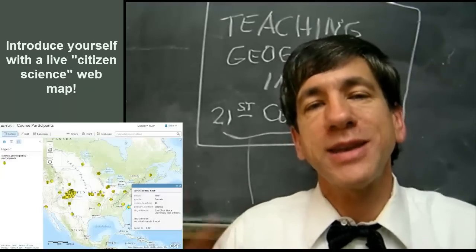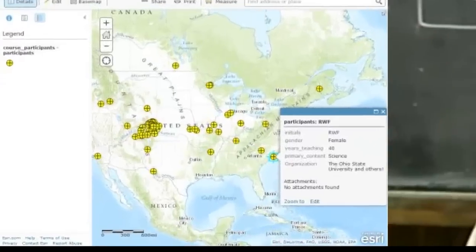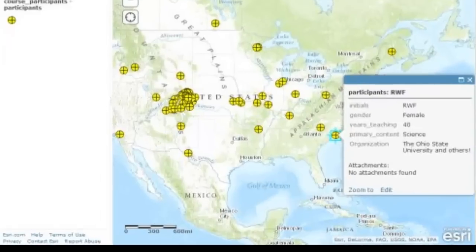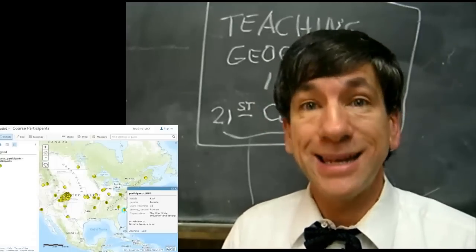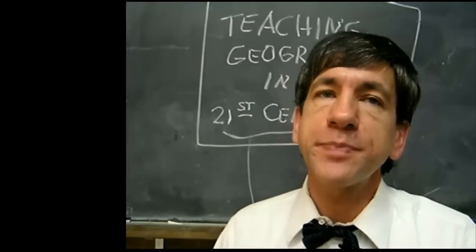And it will also provide us with a nice way of thinking spatially about where your colleagues are located in the course. We're also going to think about privacy issues. Did you put your point on your exact house? Did you put it on your school? Did you put it somewhere in your community? And what does that mean for opportunities to teach about location privacy in our world and in our geography and STEM courses?